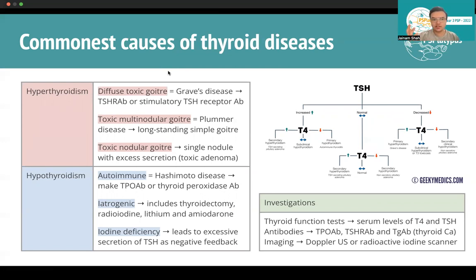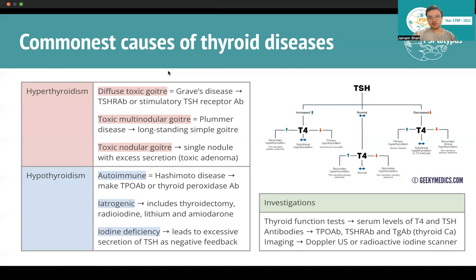Diffuse toxic goiter is not just one spot — it's an enlargement of the entire thyroid gland, most commonly Graves' disease. This is an autoimmune condition where you get the production of TSH-RAB, the TSH receptor antibody. Interestingly, most antibodies flag pathogens for destruction, but in this case the antibodies are actually stimulatory — they stimulate the TSH receptor to keep on acting, which leads to too much production of those hormones. That's a really important exception to remember.